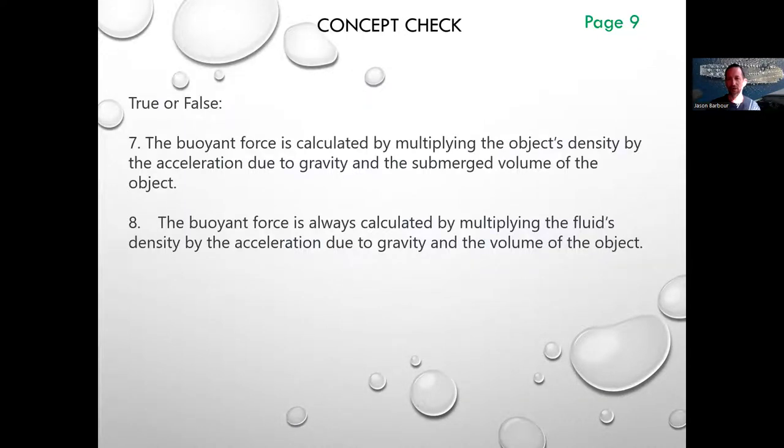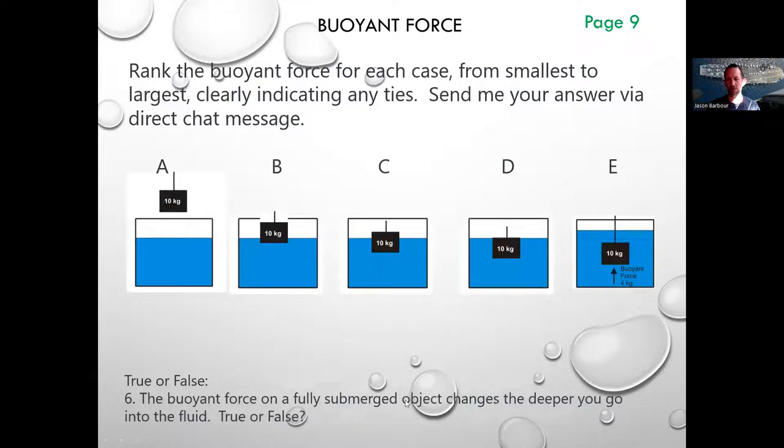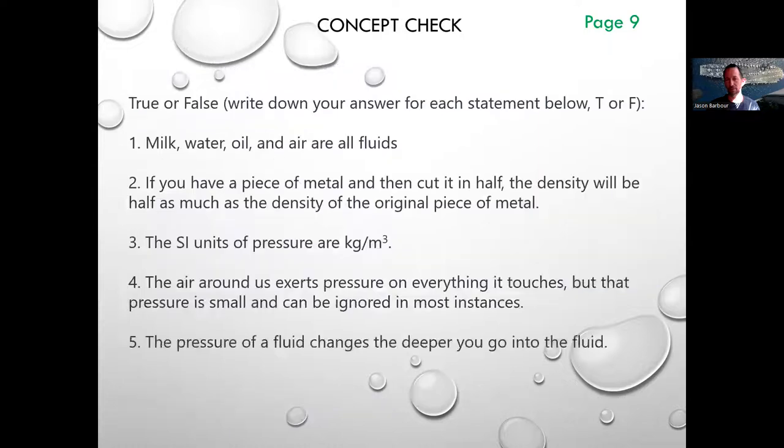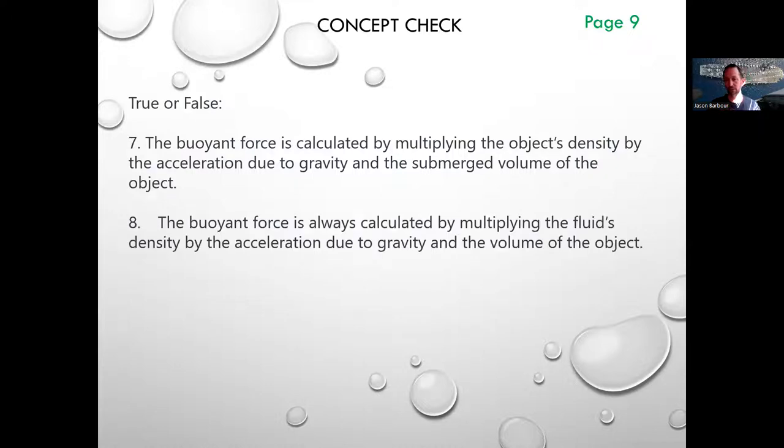Number seven and eight. The buoyant force is calculated by multiplying the object's density by the acceleration due to gravity and the submerged volume of the object. That is false. Buoyant force equals rho gv, which, oh, by the way, it's another way you can tell here that the buoyant force does not depend on depth, because it's not rho gvh or something. It doesn't have h in it, so it doesn't depend on the depth, whereas the pressure does depend on the depth. P2 equals p1 plus rho gvh. h is right in there, but for buoyant force, it's not there. So again, using that equation, buoyant force equals rho density times g times v. Sounds right, except that you don't use the object's density. You use what density? That of the fluid.